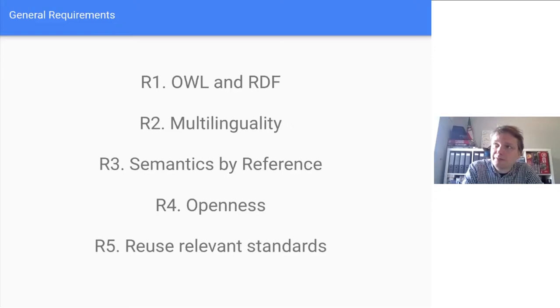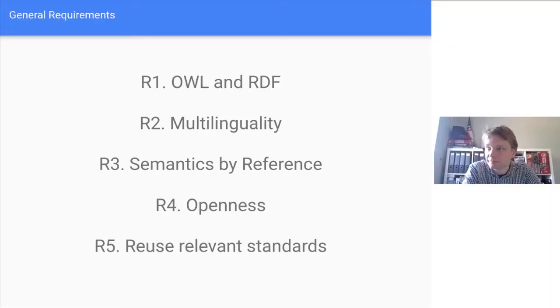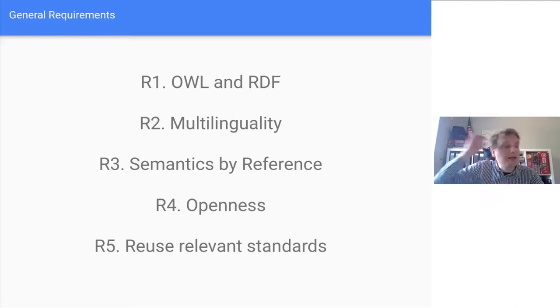When we designed the model, we had five general rules or key requirements. First, we wanted this to be a linked data model, using existing linked data standards such as the Web Ontology Language and RDF. We wanted to support multilinguality — to represent multiple languages and not make strong assumptions that might prevent the model working for other languages. We had this fundamental idea of semantics by reference: a word's meaning is not defined by a formal model, but by linking to an ontology. The meaning of a word is simply a link to an entity in an ontology.